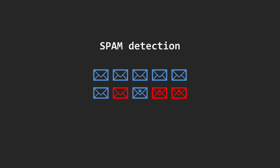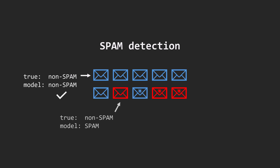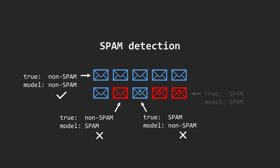For example, our model correctly classifies six regular emails, mistakenly classifies one regular email as spam, misses one spam email, and correctly identifies the remaining two spam emails.